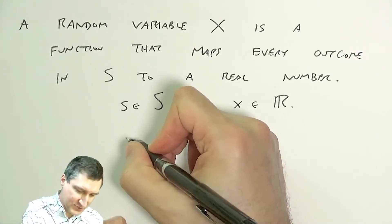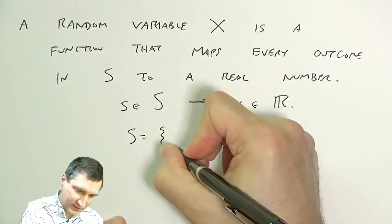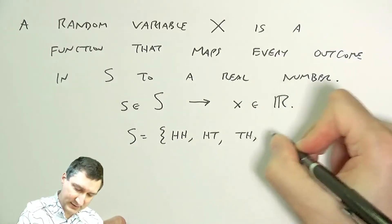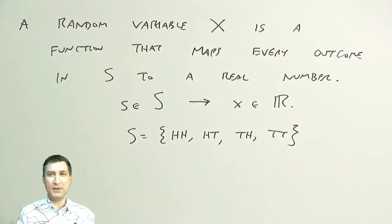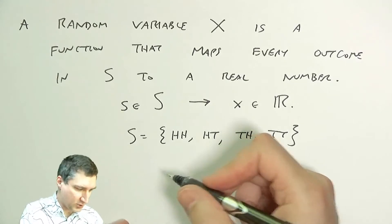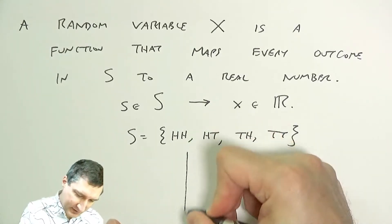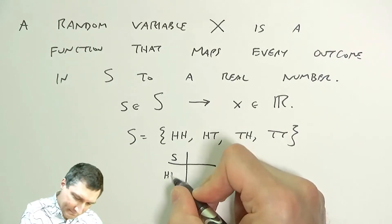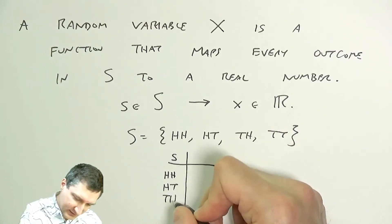So if I have the sample space being head head, head tail, tail head, tail tail, well then I could say, okay, my process for deriving a number from this is just to count the number of heads. So I have a mapping that goes from an outcome—head head, head tail, tail head, tail tail—to a number: 2, 1, 1, 0.